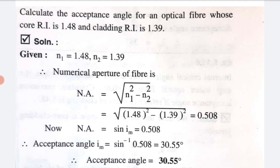Now, we know that numerical aperture equals sin(θm). So we have to find θm, the acceptance angle. Acceptance angle θm equals sine inverse of 0.508, which equals 30.55 degrees. Therefore, the acceptance angle θm is 30.55 degrees.